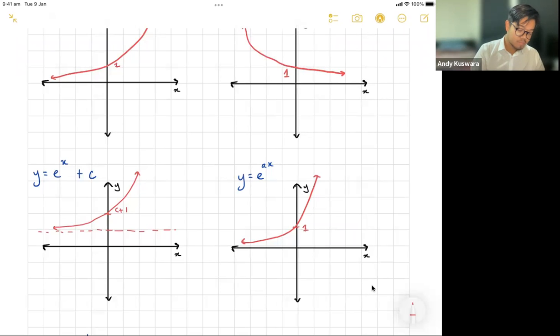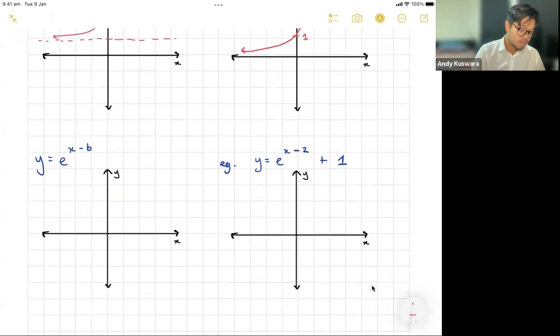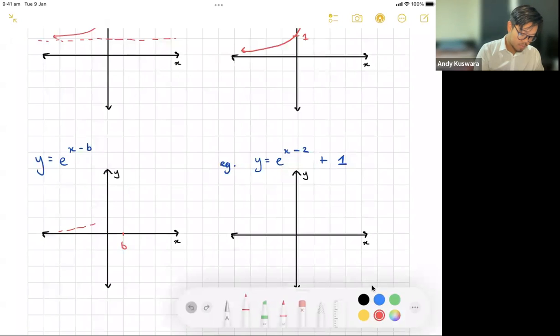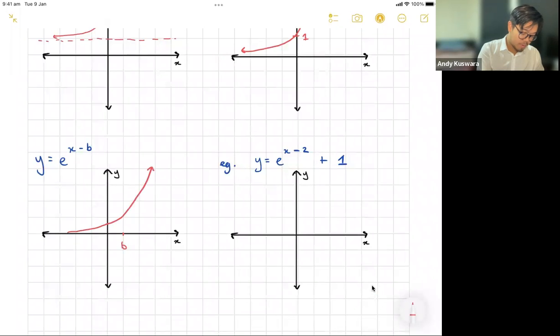Now if you have e to the x minus b, what happens here is wherever b is, let's say b is here, it moves your exponential left or right. So in this case here, if it's minus b it moves it to the right. Normally we would cut through here, but now we're actually going to cut through that point b there. So it's going to cut one at that point b.